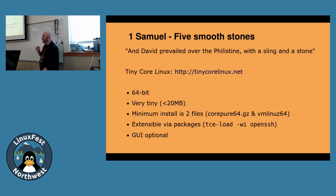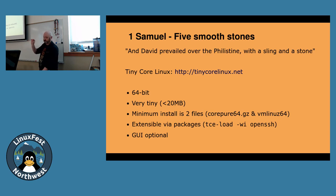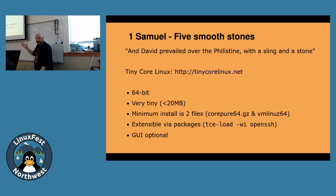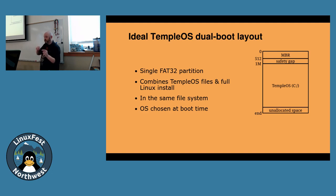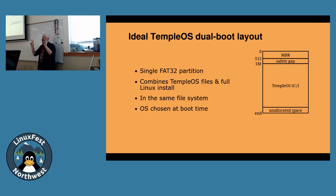And David prevailed over the Philistine with a sling and a stone. TinyCore is 64-bit — there's a 32-bit version, but it can run 64-bit, in keeping with the spirit of Temple OS. It's very small — under 20 megs. The minimum install is just two files: a kernel and a RAM disk that the kernel loads. You can add software with a package manager called tce-load, and it can support a GUI, but that is optional. Because it supports FAT32 and we know bootloaders can manage which partition we're going into, we can actually have one FAT32 partition that both Temple OS and TinyCore Linux understand — two operating systems in the same file system, and you pick which one you want at boot time.